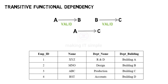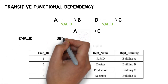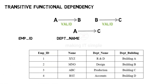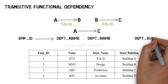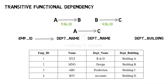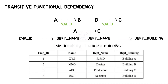Let us take an example using the employee table. Consider two Functional Dependencies: first, Employee ID determines Department Name; second, Department Name determines Department Building. Both are valid Functional Dependencies. So by transitivity, using Employee ID we can determine Department Building. This is an indirect Functional Dependency, which is called a Transitive Functional Dependency.